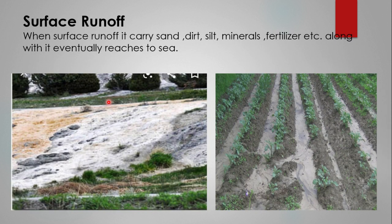Surface runoff: after heavy rainfall or during a flood, water carries salt, silt, minerals, or fertilizers along with it. This surface runoff eventually reaches the sea. So surface runoff carries minerals, fertilizers, silt, dirt, and sand along with it and reaches the seas, causing pollution in the seas.